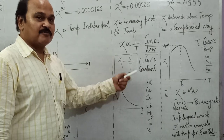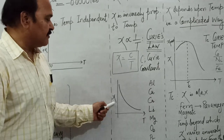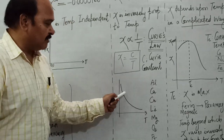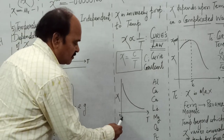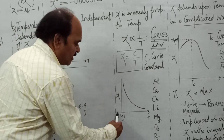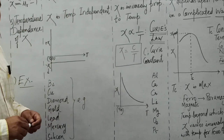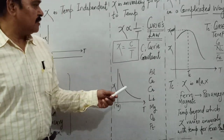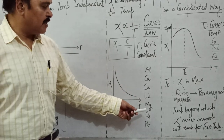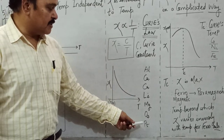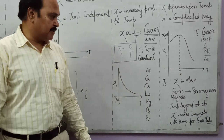If we plot χ versus T for paramagnetic substances we get a rectangular hyperbola — as temperature increases, magnetic susceptibility decreases. Examples of paramagnetic substances besides Aluminium include calcium, chromium, lithium, magnesium, oxygen, platinum, and tungsten.